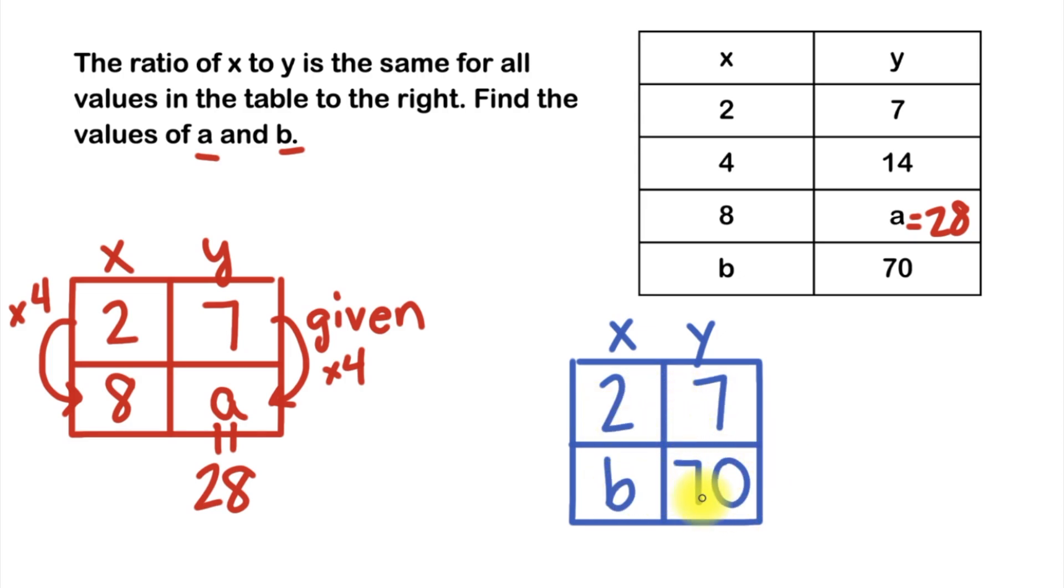Now that every box in our table is filled, the next thing and the easiest way to do this is to see if in a column where both numbers are, if there's some way to go from the first number to the second by using multiplication or division. I can't use this column here because that's b, but this column here I've got 7 up top and 70 in the bottom.